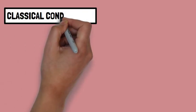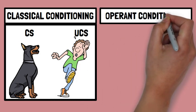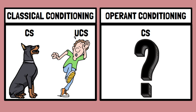In classical conditioning, the conditioned stimulus and unconditioned stimulus are well defined. But in operant conditioning, the conditioned stimulus is not defined. It can be inferred but it is not directly known.